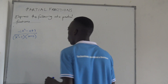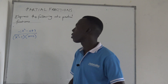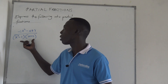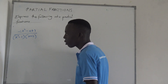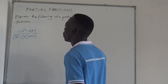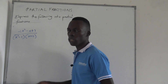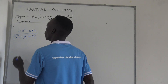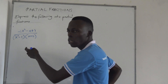We consider the denominator first, not the numerator. We look at the denominator to determine how we are going to handle this. We have x squared minus 1 and x plus 2. The second factor x plus 2 is already linear, but x squared minus 1 is not linear. We need to make it linear as well.